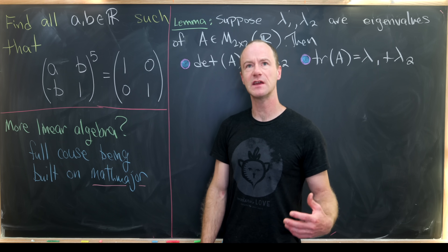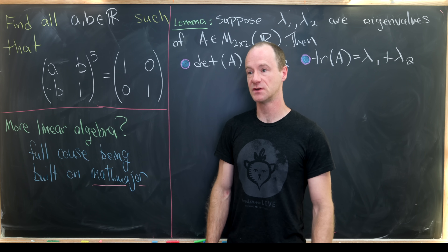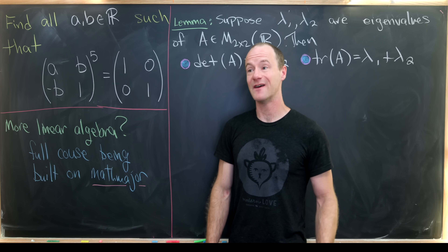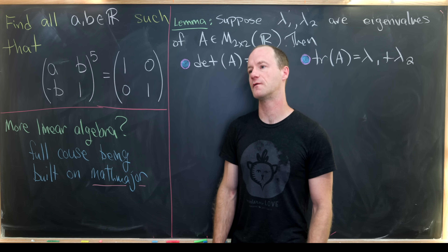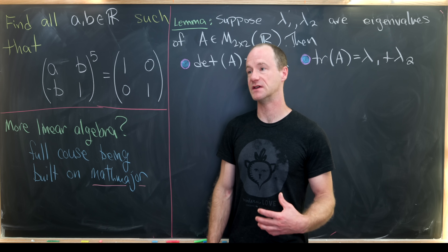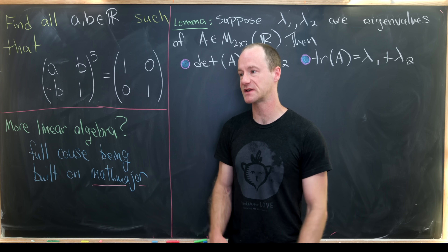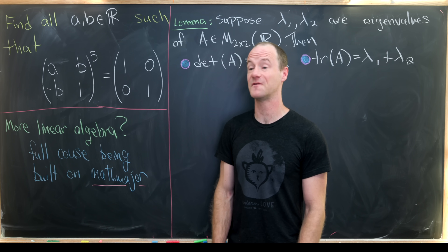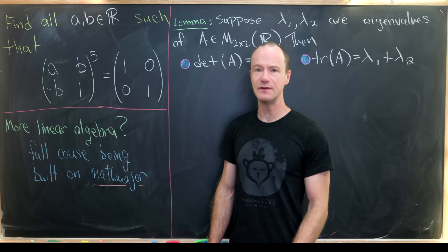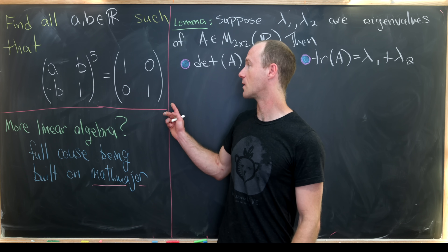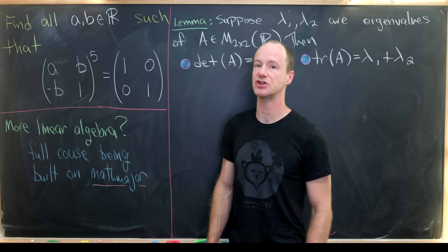If you think about this kind of question over the real numbers, the only fifth root of the number one over the real numbers is the number one itself. Of course, over the complex numbers there are five roots of the number one. So let's see what we get over matrices given this condition.